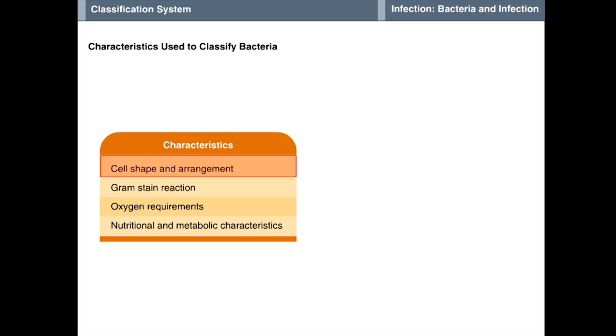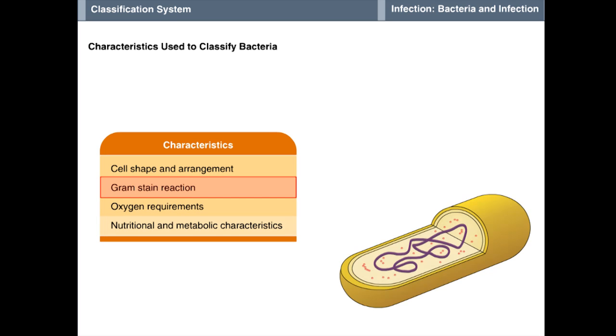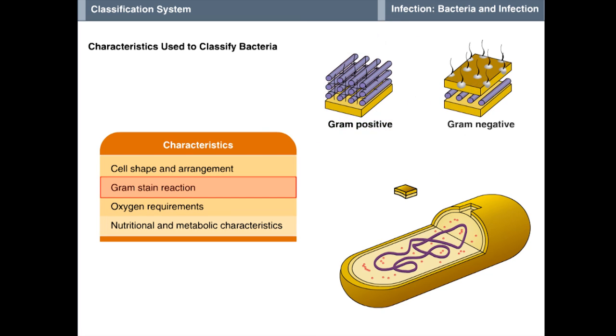A major characteristic for classifying bacteria is the gram stain reaction, which distinguishes two types of bacterial cell walls. The gram stain dye process stains gram positive bacteria dark violet, and gram negative bacteria red.